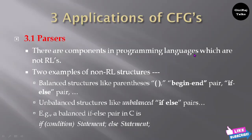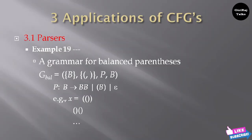There are components in programming languages which are not regular languages. Two examples of non-regular language structures: balanced structures like parenthesis, begin-end pair, if-else pair; and unbalanced structures like an unbalanced if-else pair in C. Let us take one example so you can understand — a grammar for balanced parenthesis.